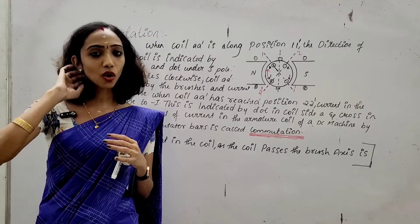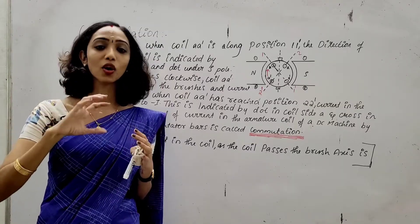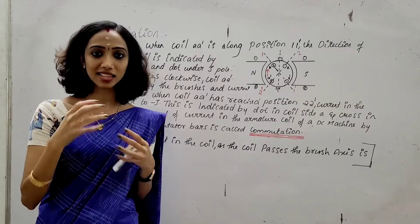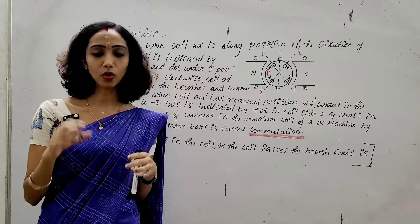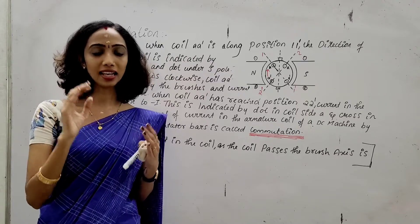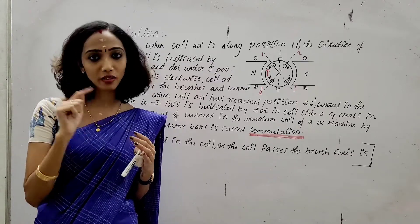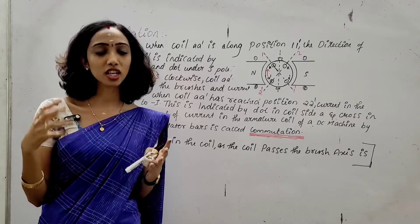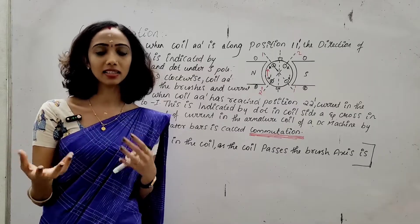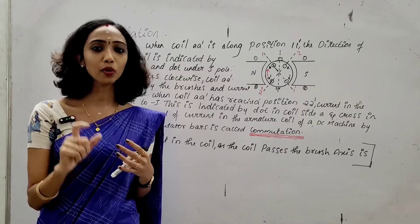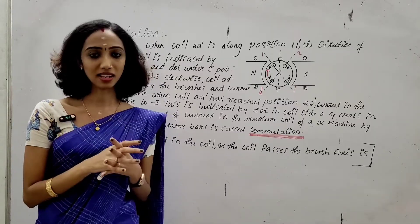Armature coils are connected to commutator segments. The key components are: commutator segments, armature coil, armature windings, and armature conductors.